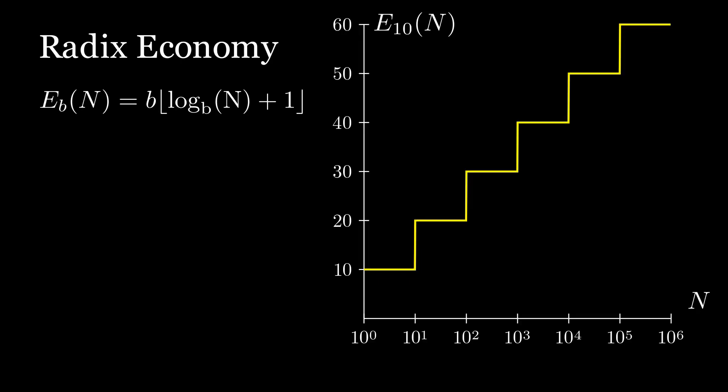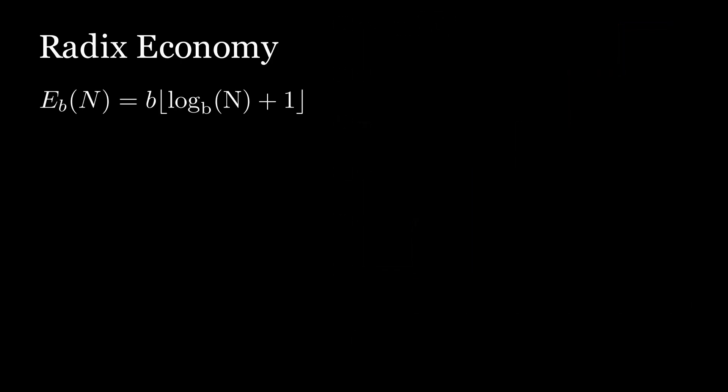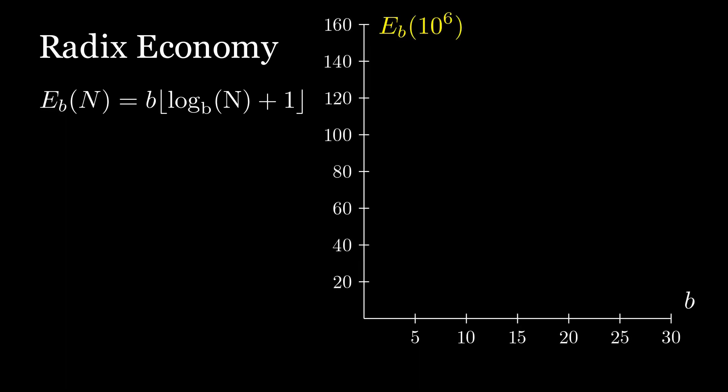This seems a bit too specific to be directly useful if it's going to be different for every number we plug in. But since we're only comparing bases, we don't need to worry about what number we're writing as long as it's the same number. We can just plug in the same number n for every base, say a million, and then we can plot the radix economy as a function of the base.